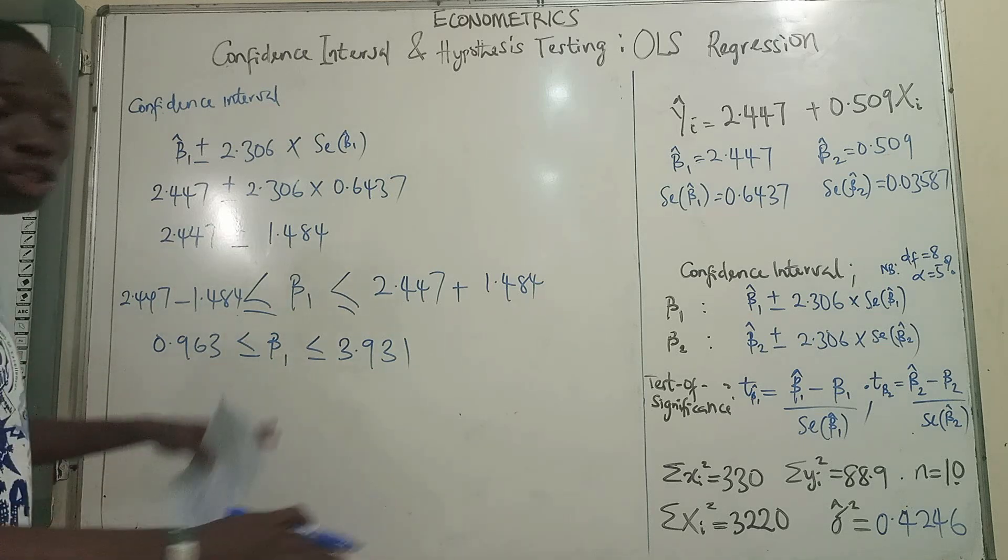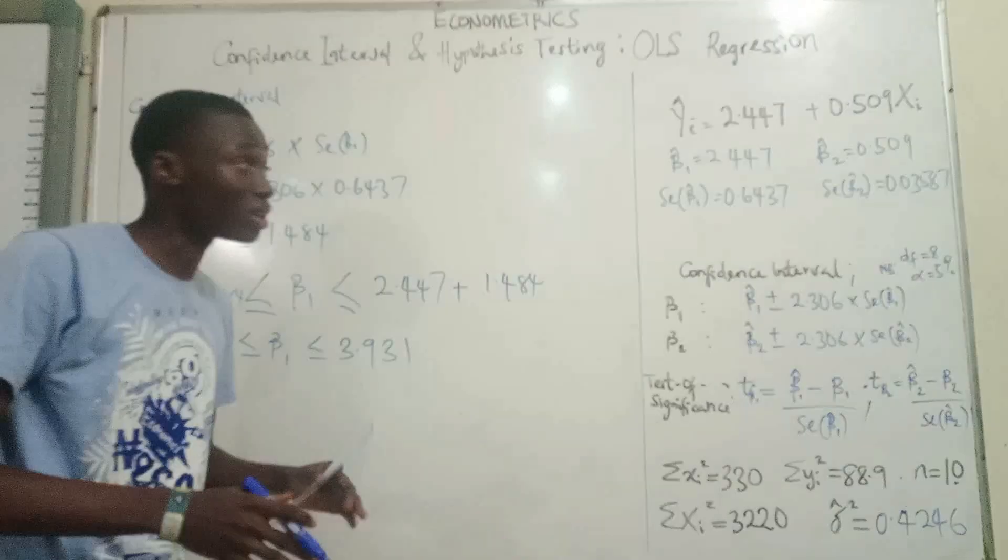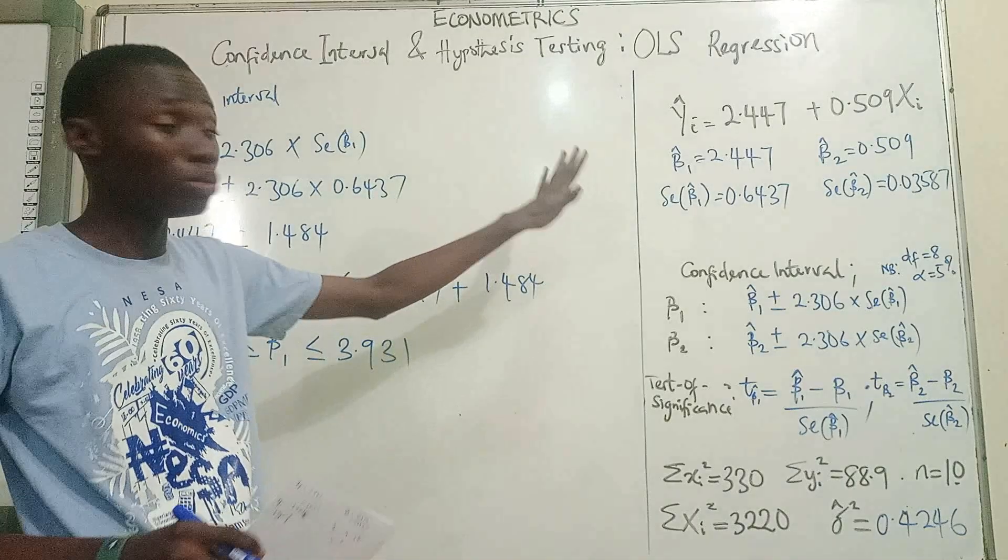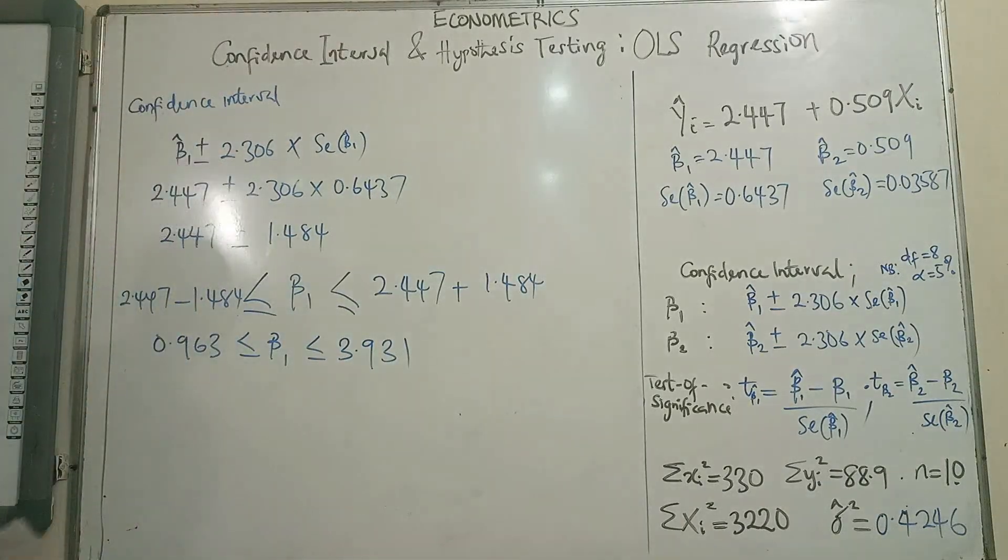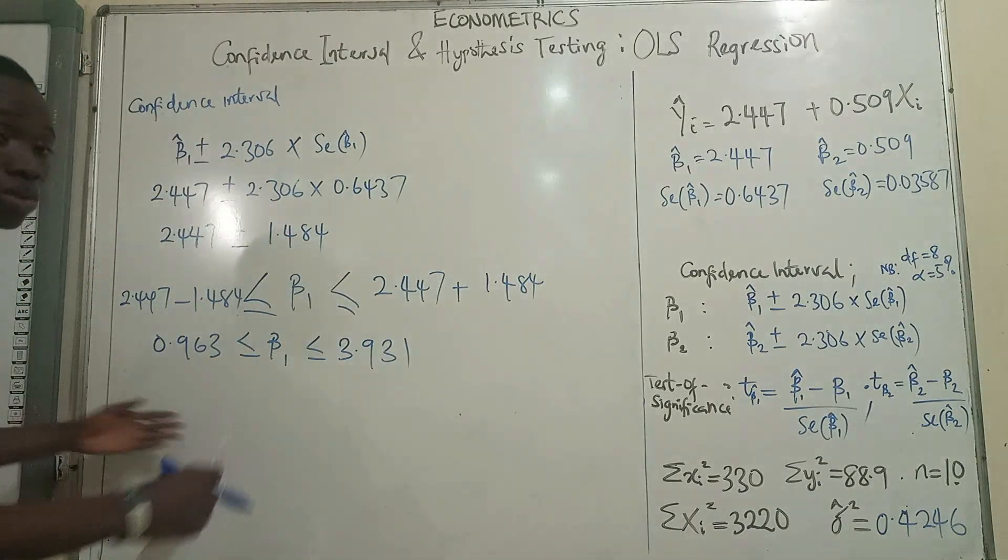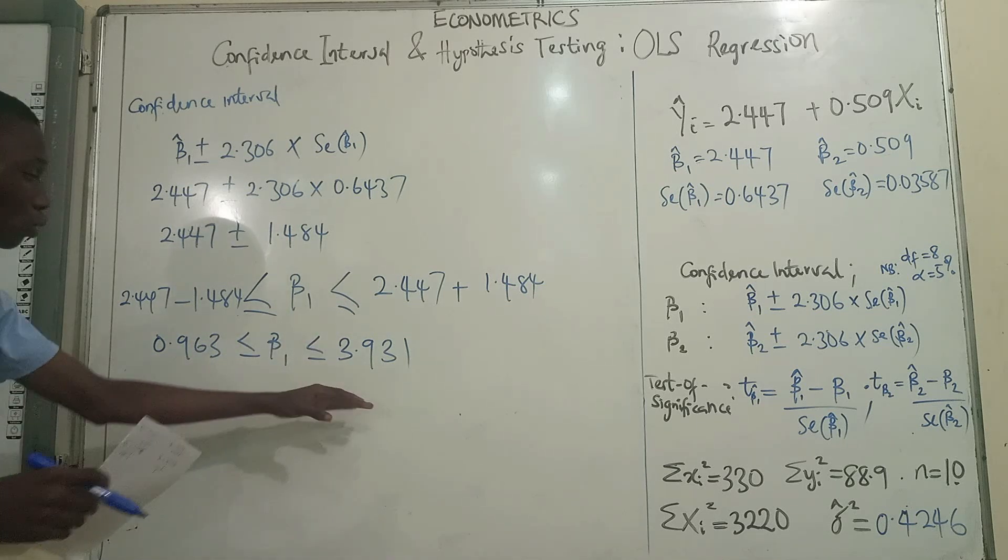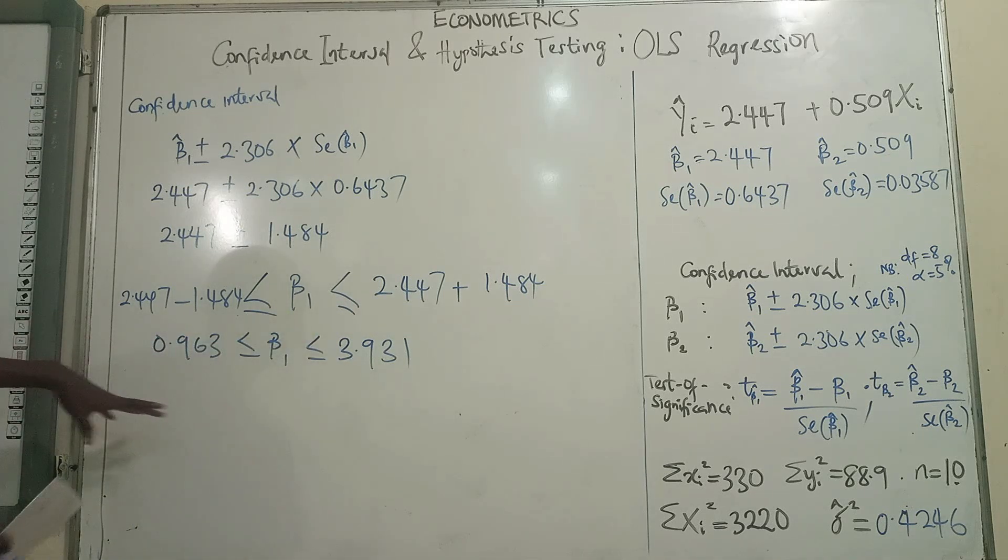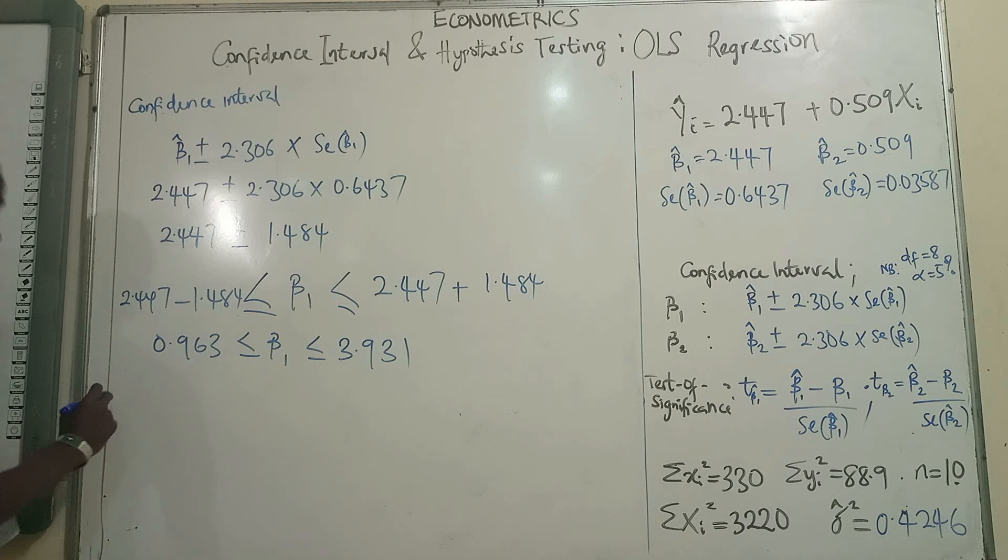So our confidence interval for beta 1 is between 0.963 and 3.931. So the true parameter for beta 1, the population estimates for beta 1, is likely going to be within this range. So that's for beta 1.